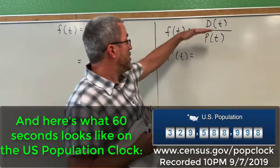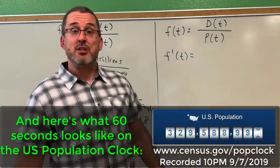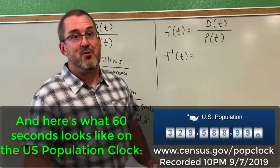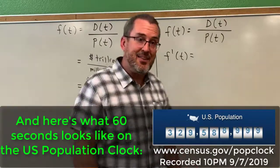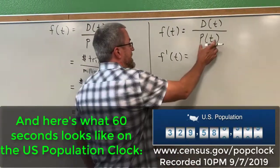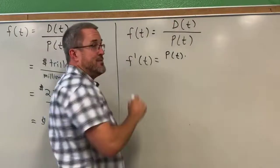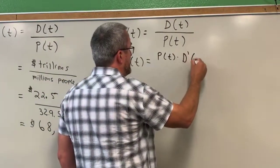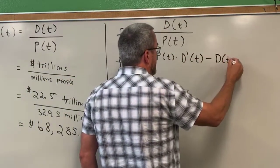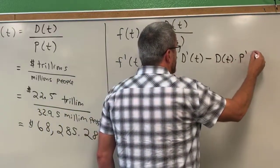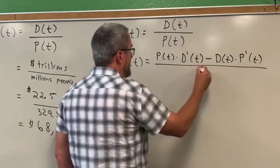Since this function is a quotient of the national debt compared against the population, we get to apply the quotient rule. You might have to go back and watch the previous video about what the quotient rule is, but here's how we apply it in this case. The quotient rule says: take the denominator function — in this case p of t — and multiply it by the derivative of the numerator function, d prime of t, minus take the numerator function, d of t, and multiply it by the derivative of the denominator function, p prime of t, and all of that gets divided by the denominator function squared.